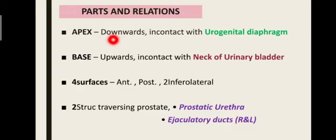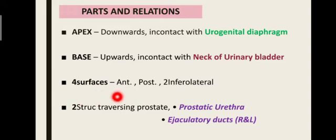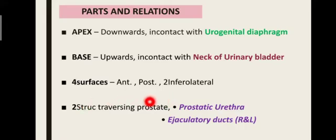The prostate has an apex facing downwards in contact with the urogenital diaphragm, and a base which is upwards in contact with the neck of the urinary bladder, along with four surfaces: anterior, posterior, and two inferolateral surfaces. There are also two structures that traverse the prostate gland: the prostatic urethra and the ejaculatory ducts.